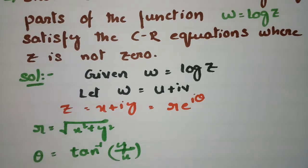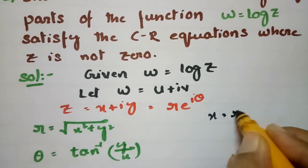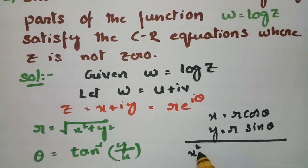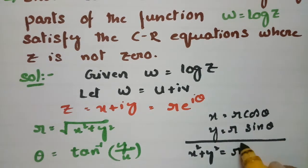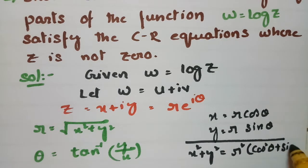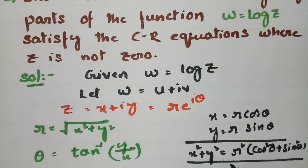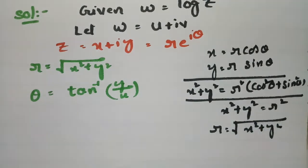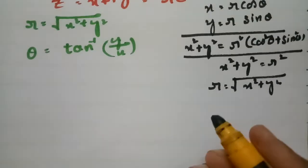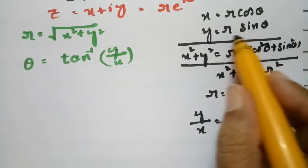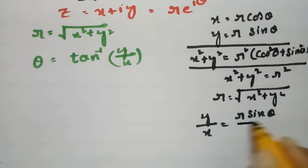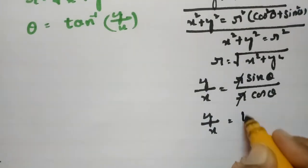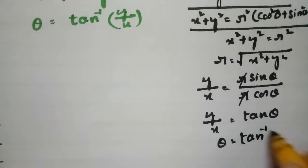I will show you how we get this. We know x = r·cosθ and y = r·sinθ. If we square and add both sides, x² + y² = r²cos²θ + r²sin²θ = r²(cos²θ + sin²θ) = r². So r = √(x² + y²). And considering y/x = r·sinθ / r·cosθ = tanθ, so θ = tan⁻¹(y/x).